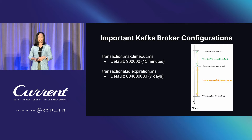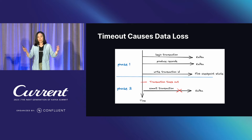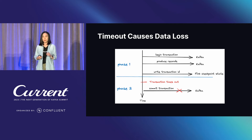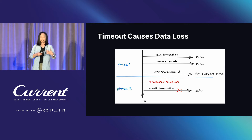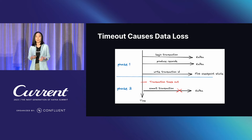When a timeout happens after phase one is successful but before phase two commits, the transaction times out and can never be committed. Phase two fails forever. And 15 minutes may seem long, but this applies to any Kafka outage. If Kafka brokers go down for over 15 minutes and you had open transactions that completed phase one, those transactions can never commit once the brokers come back up — that's when data loss happens.